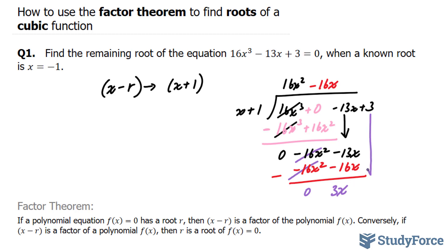Now we'll bring this term down, plus 3. And I'll divide 3x with x, that gives me positive 3. 3 times x is 3x, and 3 times 1 is 3, giving me a total of 0. The fact that we got no remainder suggests that this, indeed, is a factor of this cubic function.